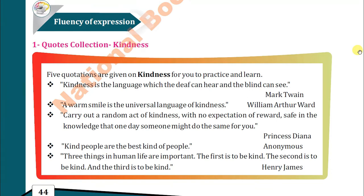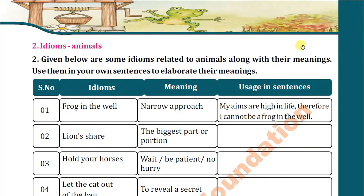Then we come to the idioms about animals. Because it's an animal story, the idioms chosen by the writer are also related to animals. You have to learn them and write the meanings in your copies — that is also your task. 'Frog in the well' means a narrow approach. Example: 'My aims are high in life, therefore I cannot be a frog in the well' or 'My visions are high, that is why I am not a frog in the well.' Next is 'lion's share' — the biggest part or portion. Example: 'The elder brother will get the lion's share of his father's property.'